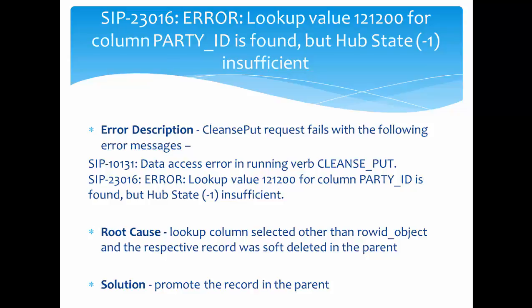The second error is SIP-23016: lookup value — for example, 1212000 — for column party_ID is found but hub_state is -1 (insufficient). This error comes when using the cleansport API. The root cause is that a lookup column other than the row ID object is selected. If you use a custom column such as first name, last name, or party_ID for the lookup, and the respective record is soft deleted (hub_state = -1), this error occurs.